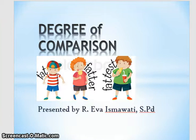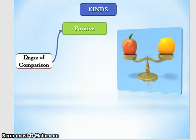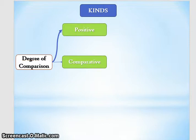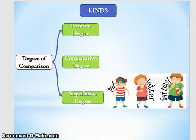Apa itu degree of comparison? Degree of comparison itu ketika kamu membandingkan beberapa hal — satu hal dengan hal yang lainnya — dan kalian mendapatkan hasil yang berbeda-beda. Degree of comparison dibagi menjadi tiga: yang pertama positive degree, yang kedua comparative degree, yang ketiga superlative degree.